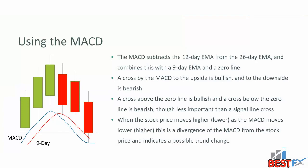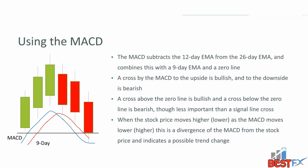The MACD is a type of exponential moving average. It subtracts the 12-day exponential moving average from the 26-day exponential moving average to get the MACD line, and then it combines this with a 9-day exponential moving average, as well as a zero line that the MACD and the 9-day EMA can cross above and below.